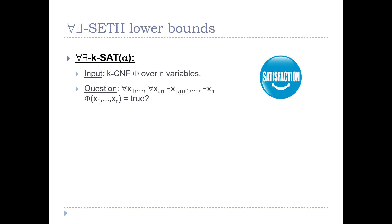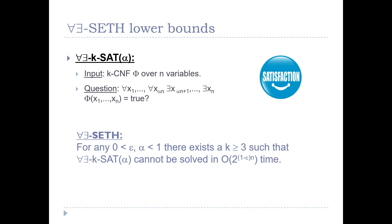We introduce a new hypothesis — a variant of SETH — which we call the ForAll-Exist SETH. It is based on the problem ForAll-Exist k-SAT_alpha, where alpha is between 0 and 1. The input is a k-CNF formula over n variables, and the question is whether for any assignment to the first alpha*n variables, there exists an assignment to the remaining variables satisfying the formula. This can be thought of as going one level higher in the polynomial hierarchy. The ForAll-Exist SETH states that for any epsilon and alpha in (0,1), there exists a k such that ForAll-Exist k-SAT_alpha cannot be solved in O(2^{(1-epsilon)*n}) time.